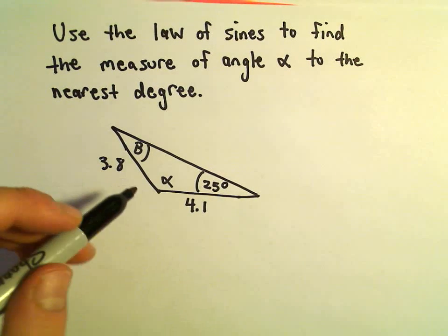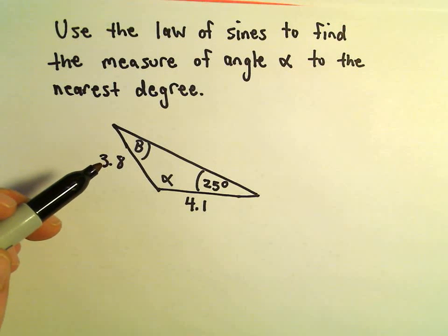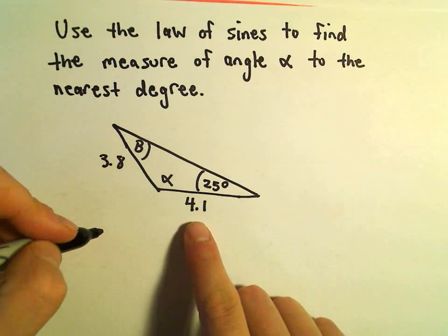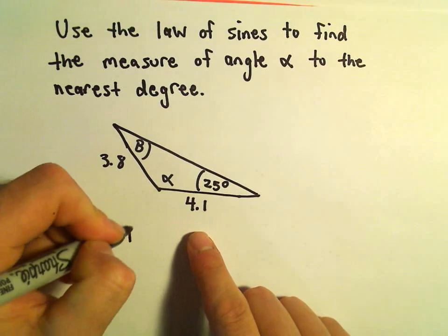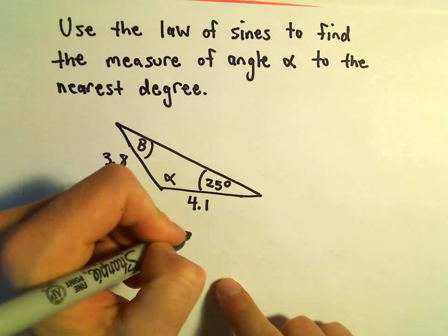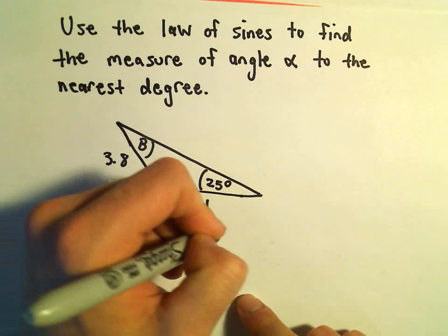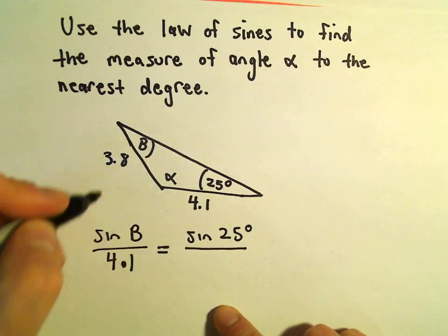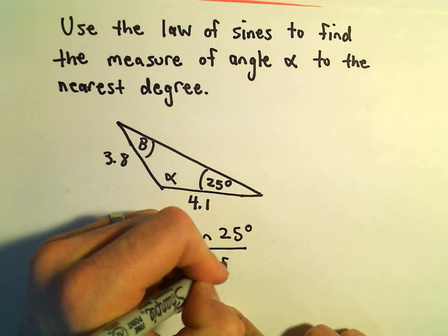So, the first thing I'm going to have to do is figure out our angle b here. We can say sine of angle b over 4.1, that's going to equal sine of 25 degrees over 3.8.